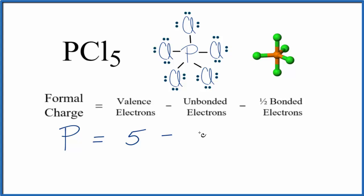For bonded electrons, we have two, four, six, eight, ten—a total of 10 electrons involved in the chemical bonds. We'll divide that by two, which gives us five. So five minus zero minus five equals zero. The formal charge on the phosphorus in PCl5 is zero.